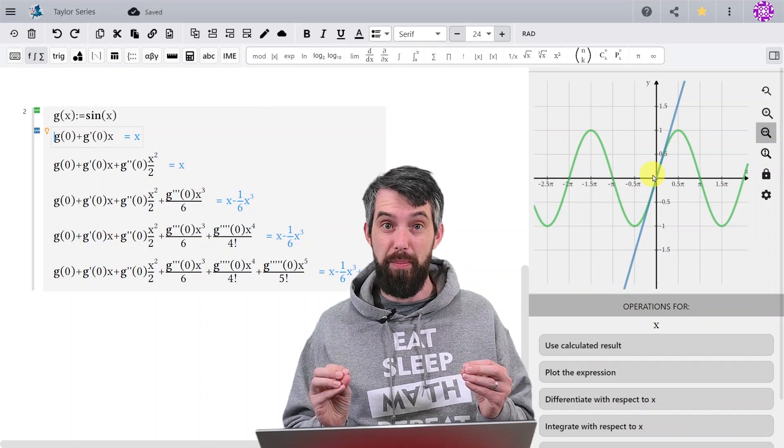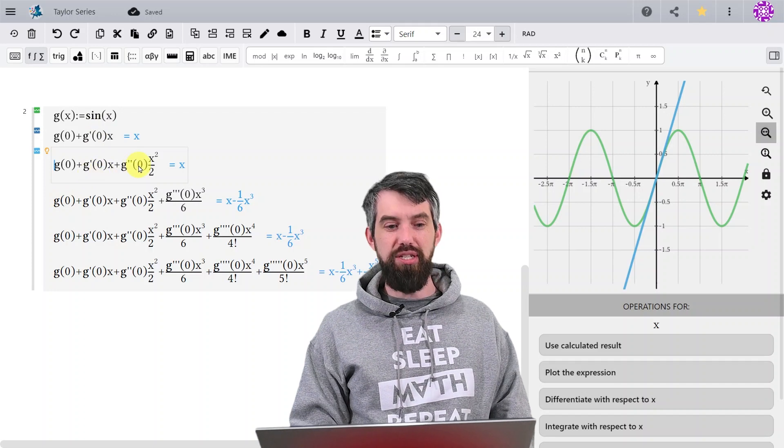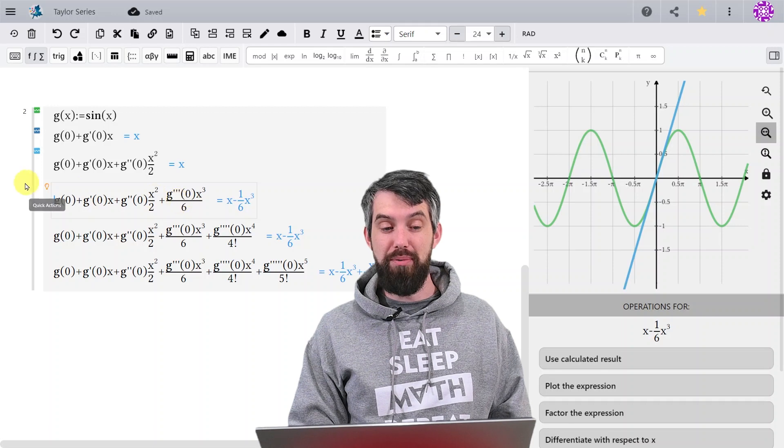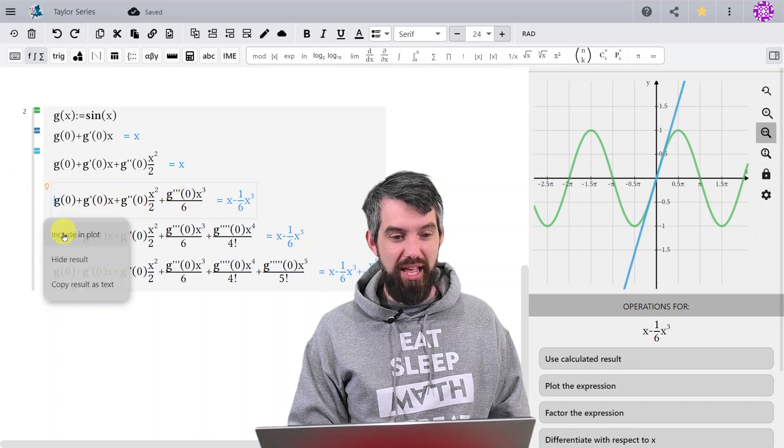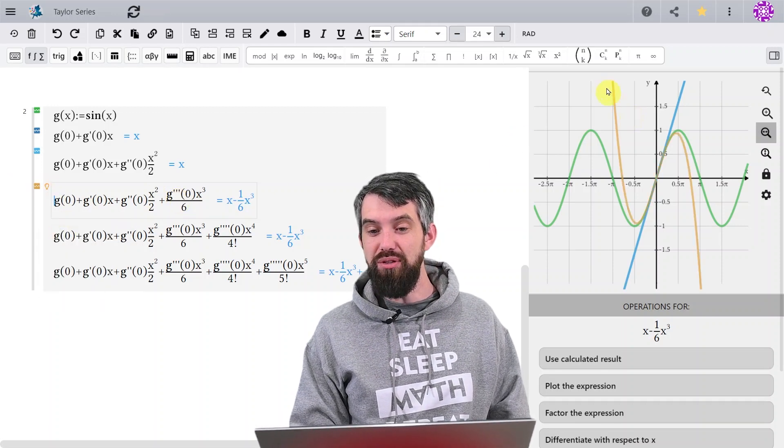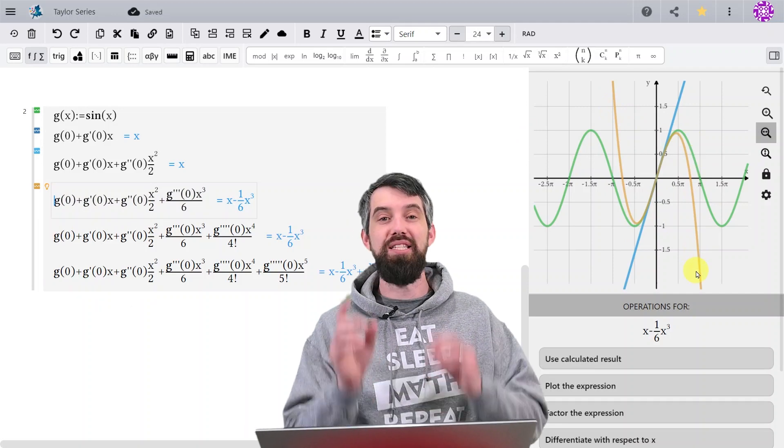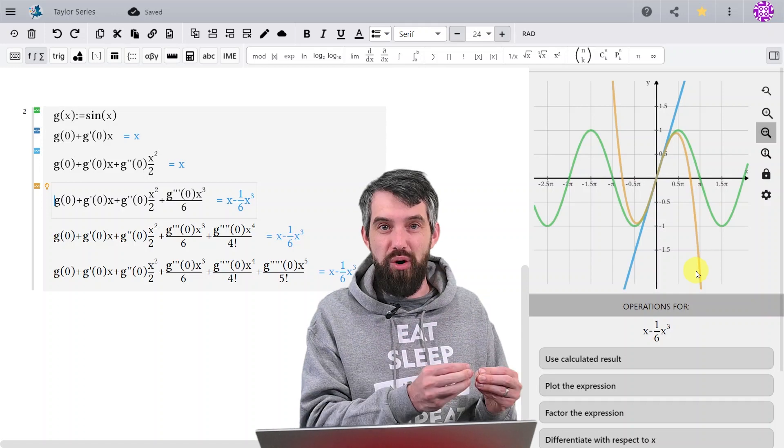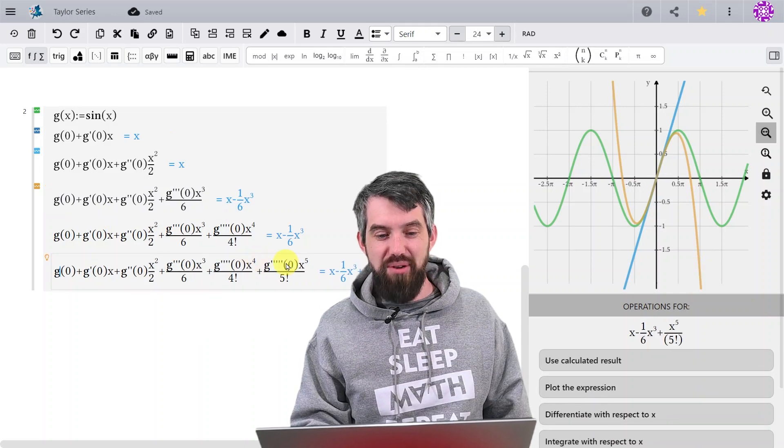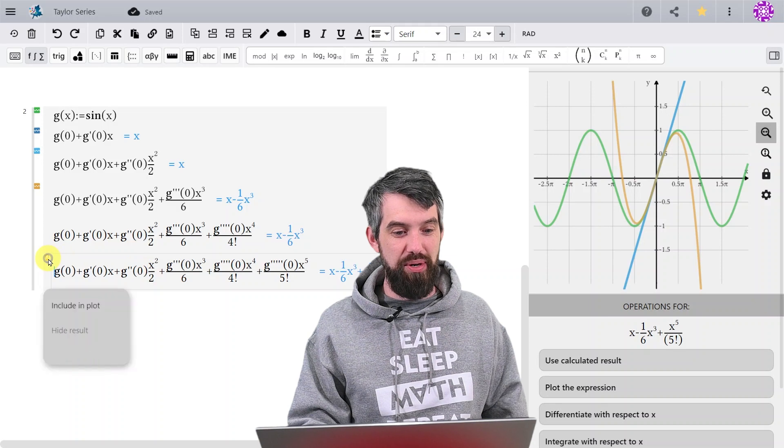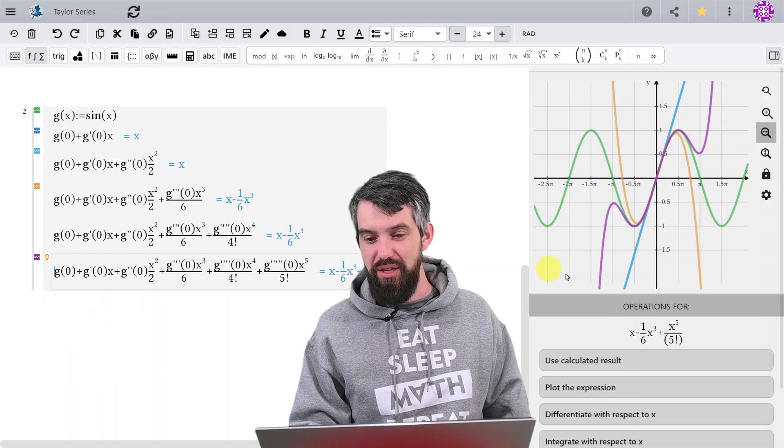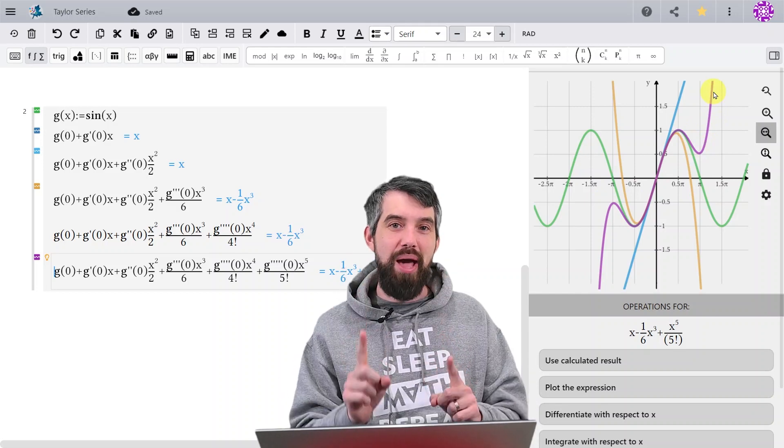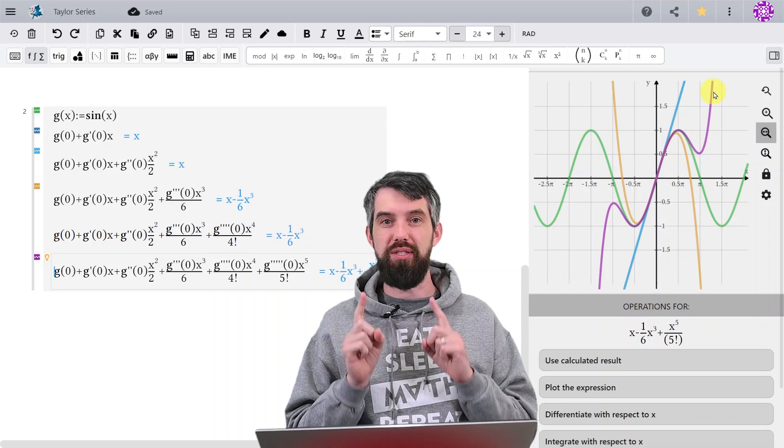Now, the next expression g double prime just happens to be zero, so it doesn't improve anything, but the following one which goes all the way up to a g triple prime term, if I include that in the plot, now you see that I have this really nice cubic that is just a better approximation to the original sine of x than just the linear one. And going all the way down to the fifth order approximation, including that in the plot as well, you get this purple curve, and this quintic polynomial is yet a better approximation for the original sine of x.